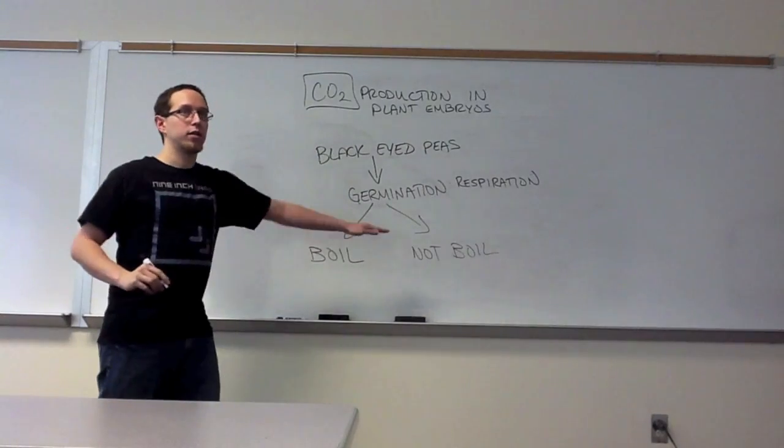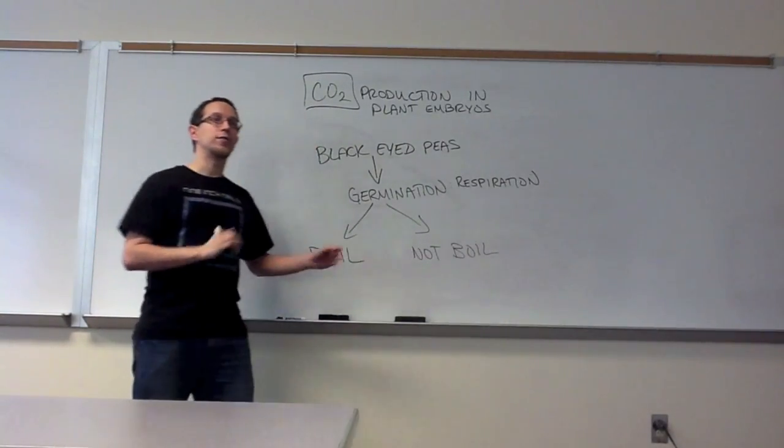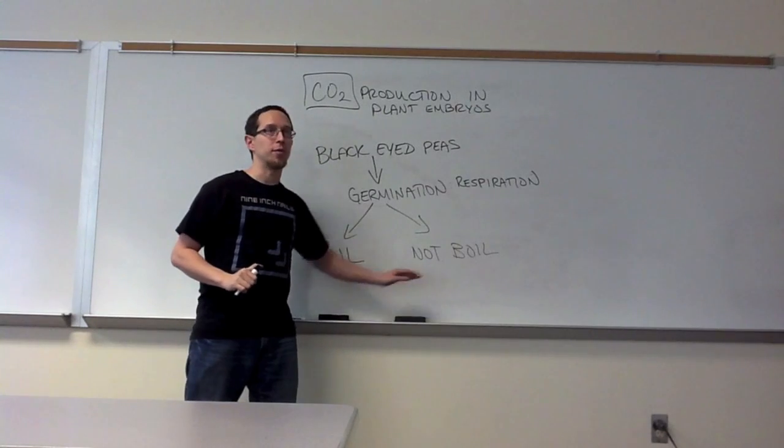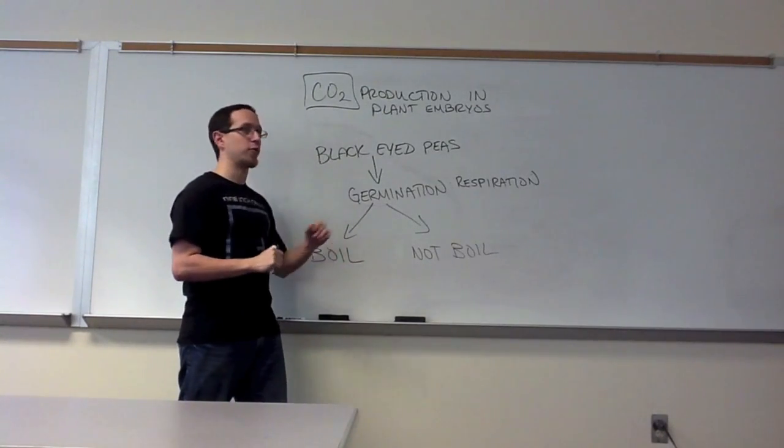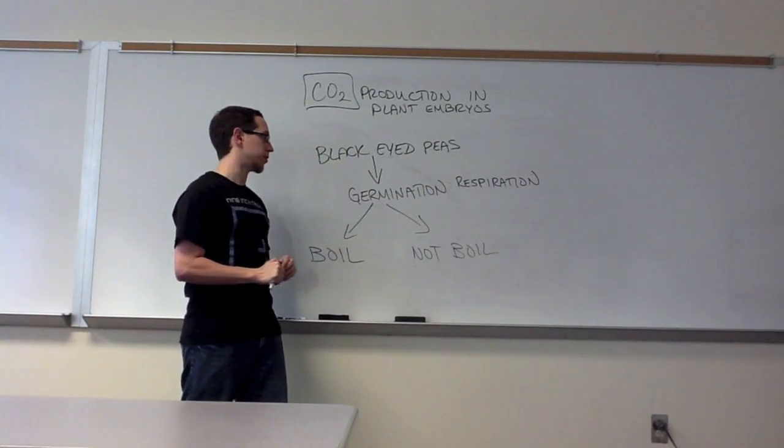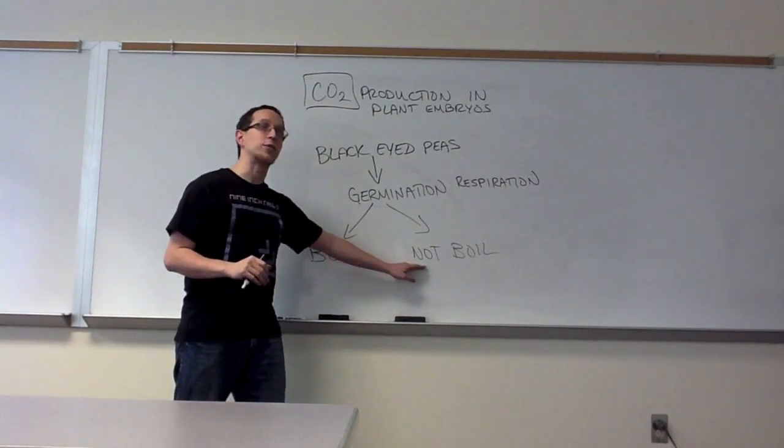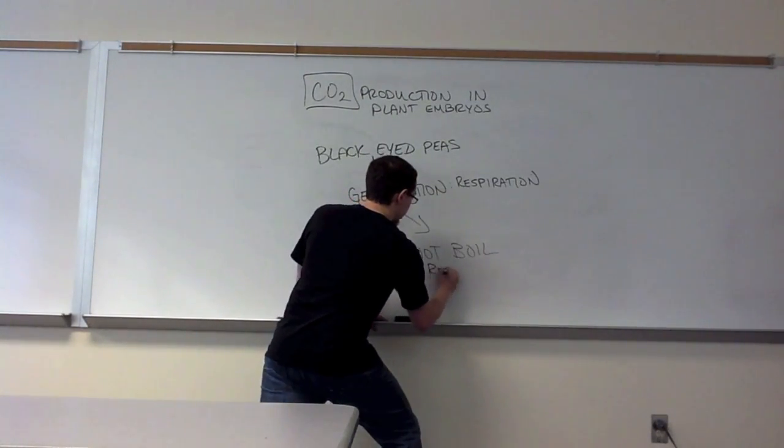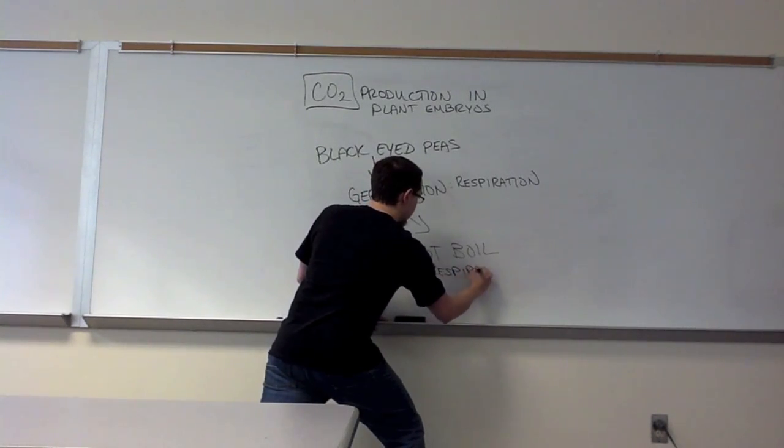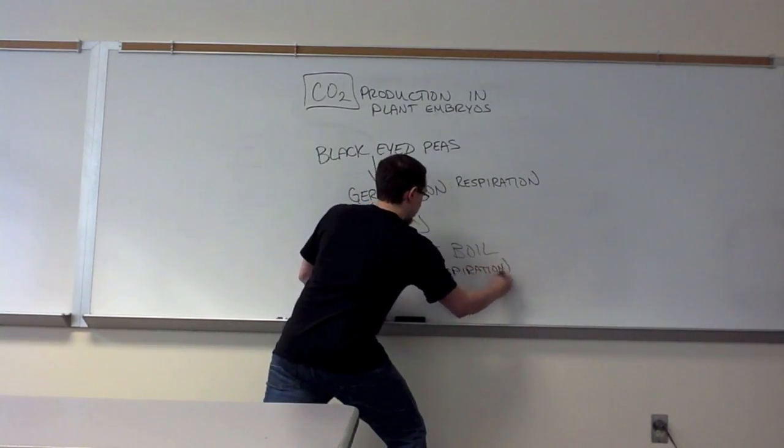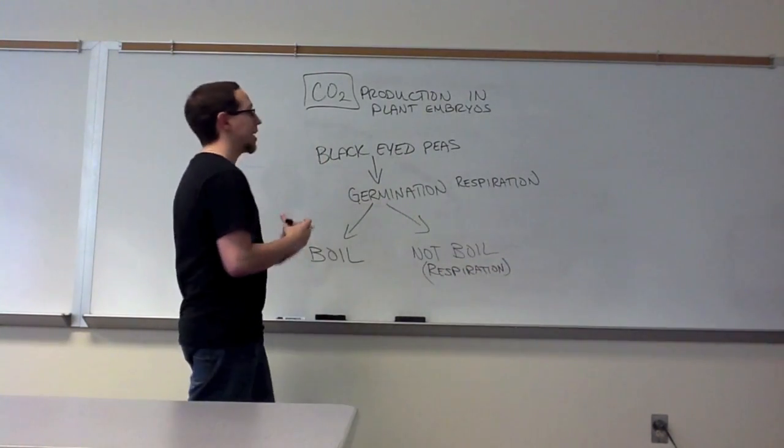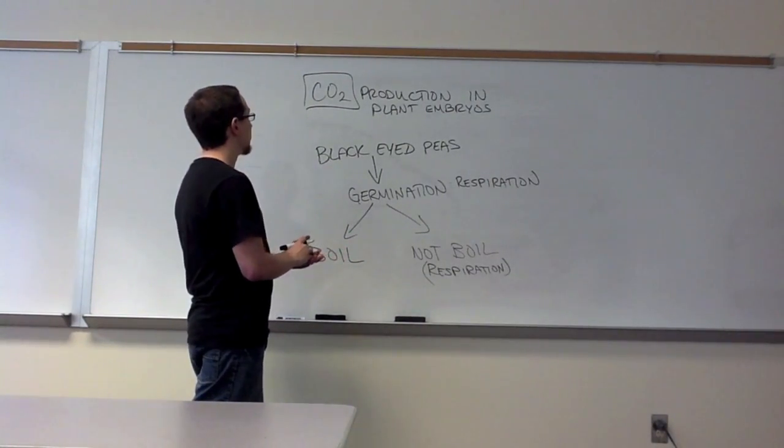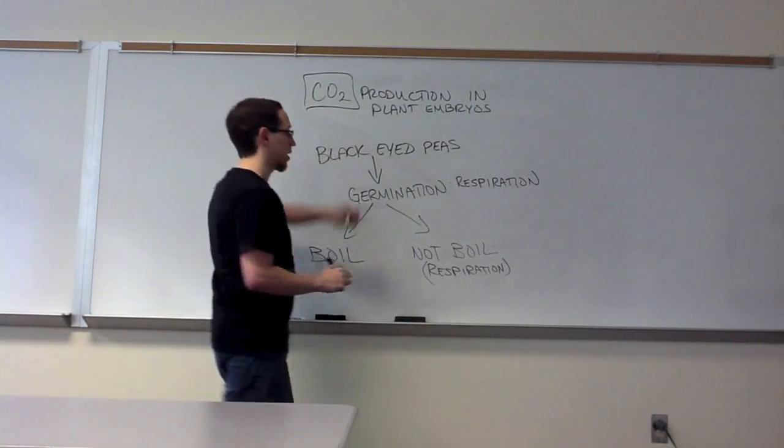Now, thinking about this, which of these two sets of peas is technically still performing germination and therefore still performing respiration? If you said those that were not boiled, you're correct. So these are still performing respiration, which means if they're utilizing glucose and oxygen, then they should be producing carbon dioxide.